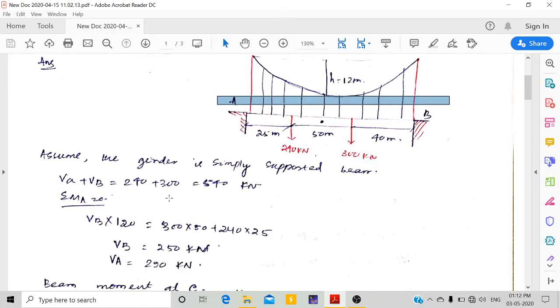First, I applied summation of Fy, the first equation of equilibrium. The reactions will develop here in the upward direction. Drawing the free body diagram, VA plus VB equals the downward forces 240 and 300 kN, which is 540 kN.